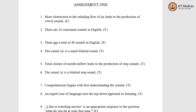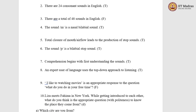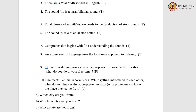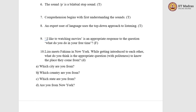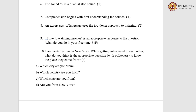The ninth question is: 'I like to watching movies' is an appropriate response to the question 'what do you do in your free time?' The answer is false. 'I like to watching movies' is a grammatically wrong sentence. You may either say 'I like watching movies' or 'I like to watch movies'. When we use 'to', we don't add '-ing' to the verb.